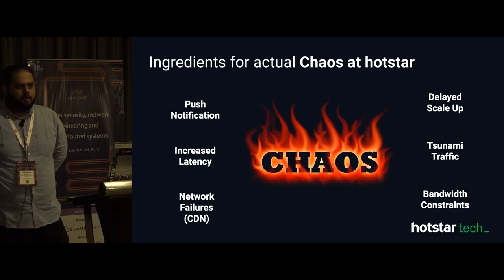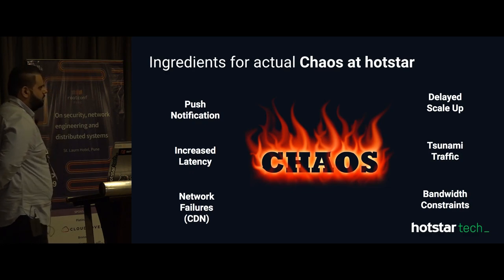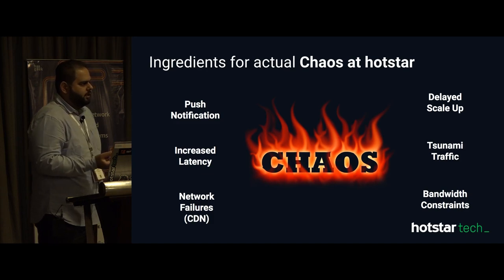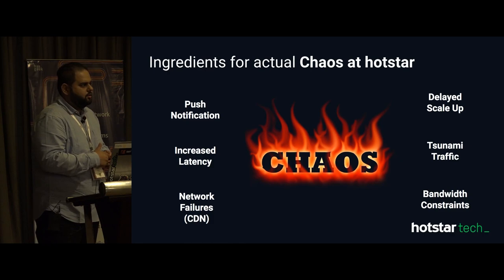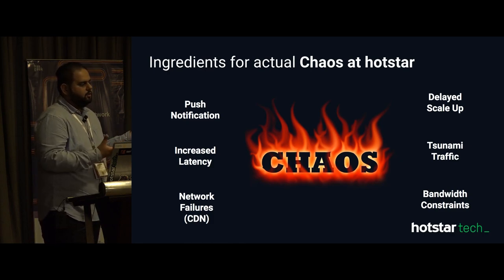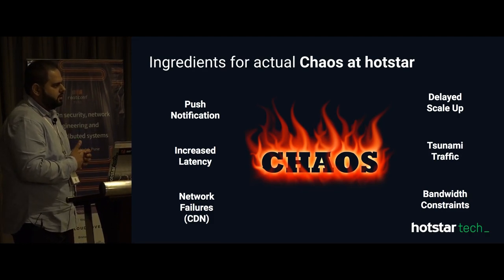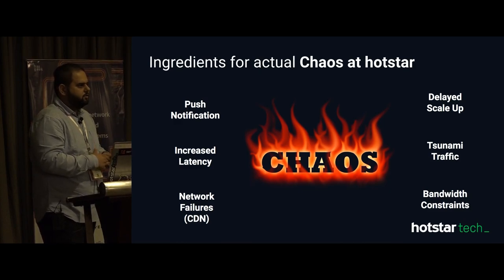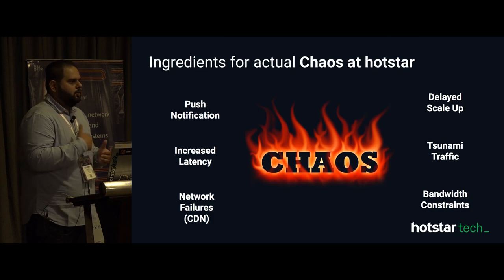What are the things that can cause actual chaos at Hotstar during a live match? Push notifications — I already spoke about that. Increased latency has a lot of downstream effect: if any API's response time increases by 20 or 30 milliseconds, there can be a 200 ms increase downstream because services depend on each other. And the interesting part about personalization and recommendation engines is these APIs cannot be cached because each user has their own different taste — your watch history and recommendations are different from mine. Any increase in latency is simply not acceptable.